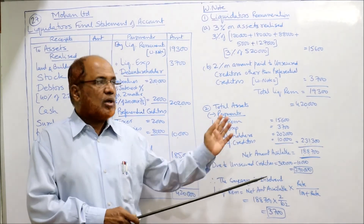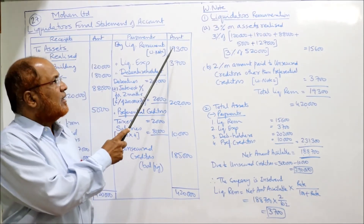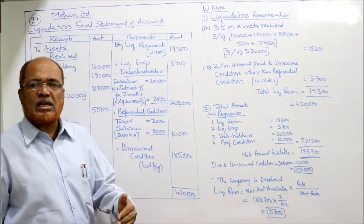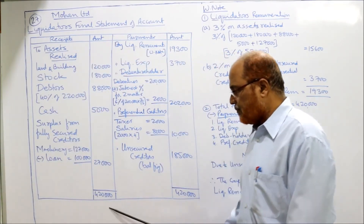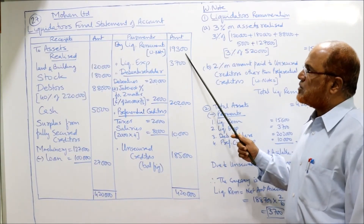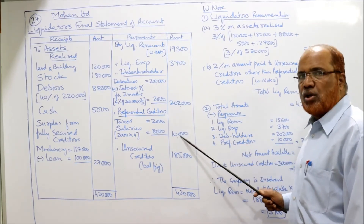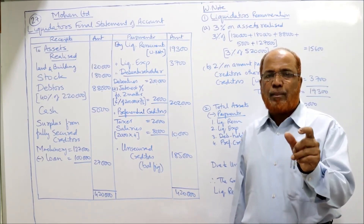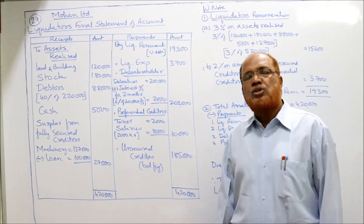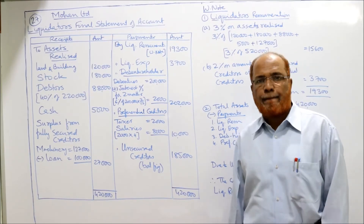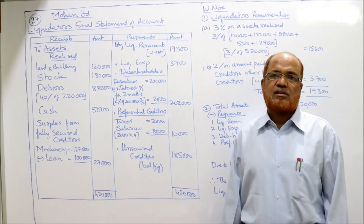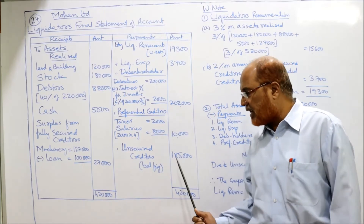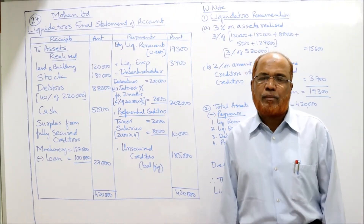Bring Rs.19,300 to the payment side. Now the final amount paid to unsecured creditors: Rs.4,20,000 (total receipts) minus Rs.19,300 (remuneration) minus Rs.3,700 (liquidation expenses) minus Rs.2,02,000 (debenture holders) minus Rs.10,000 (preferential creditors) = Rs.1,85,000. Amount due to unsecured creditors was Rs.2,90,000 but the company only pays Rs.1,85,000 — a loss to unsecured creditors. This concludes problem number 27.